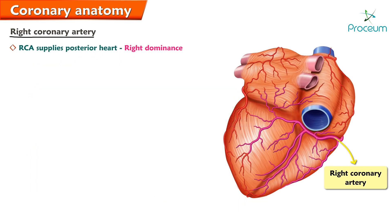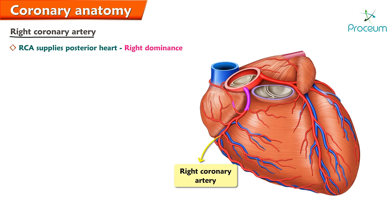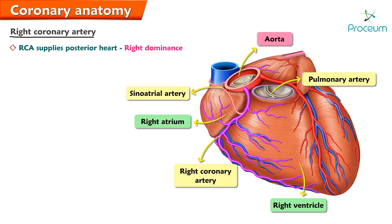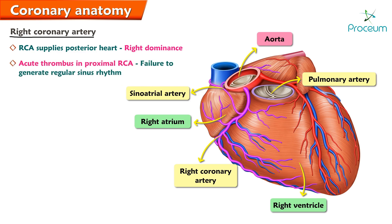When the RCA supplies the posterior heart, it is known as right dominance. The right coronary artery passes anteriorly to the right of the pulmonary artery root, coursing posteriorly through the sulcus between the right atrium and the right ventricle. The sinoatrial artery originates from the right coronary artery to supply the sinoatrial node.